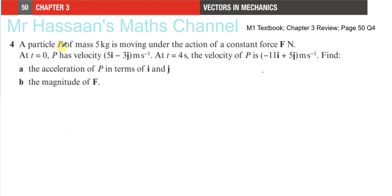A particle P of mass 5 kilograms is moving under the action of a constant force F newtons. At time equals 0, P has a velocity of 5i minus 3j meters per second, and at time equals 4 seconds, the velocity of P is minus 11i plus 5j meters per second. Find the acceleration of P in terms of i and j.